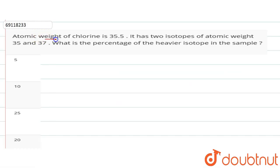In this question, we have given the atomic weight of chlorine, 35.5. It has two isotopes of atomic weight, 35 and 37. What is the percentage of the heavier isotopes in the sample?